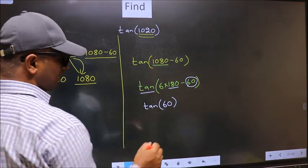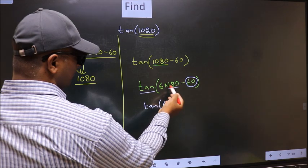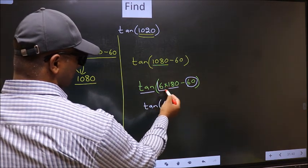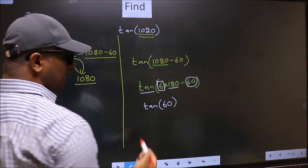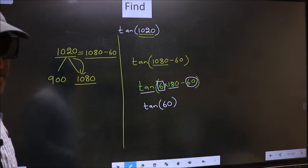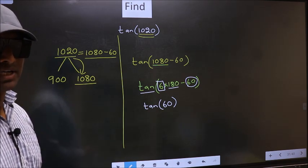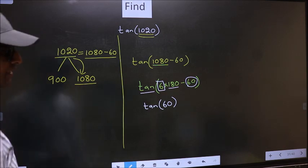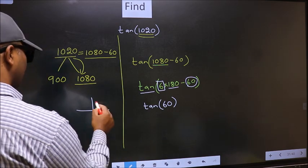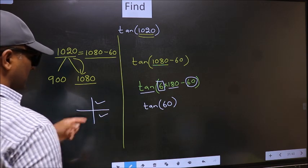To answer that, we should look at the number before 180. That is 6. That is 6. And 6 is even. And all the even multiples of 180, they lie in either in the 1st or in the 4th quadrant.